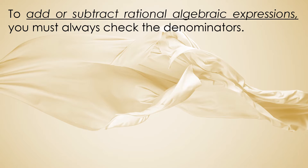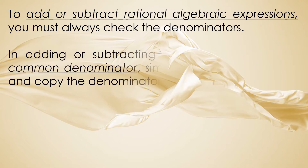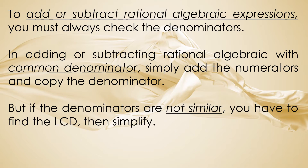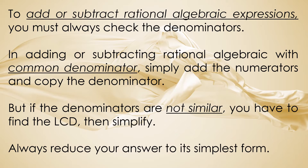To add or subtract rational algebraic expressions, you must always check the denominators. When adding or subtracting rational algebraic expressions with a common denominator, simply add the numerators and copy the denominator. But if the denominators are not similar, you have to find the LCD, then simplify. Always reduce your answer to its simplest form or lowest term.